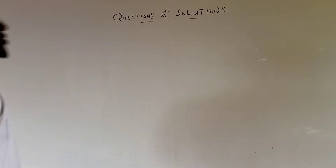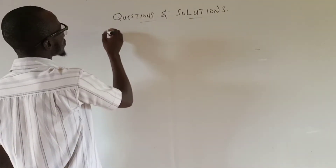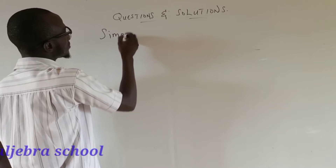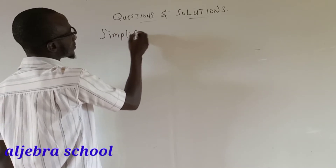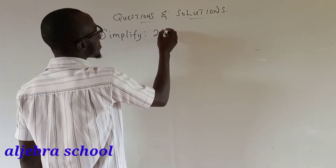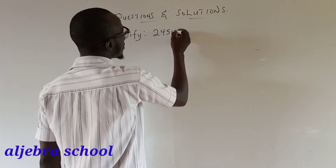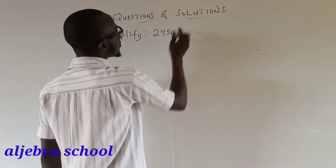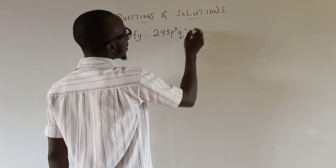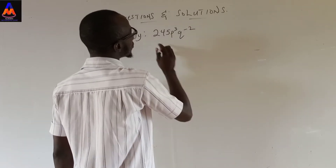Another question we are asked to simplify: the square root of 2 squared times 4 times 5 times 3 times Q times Q squared minus 2.